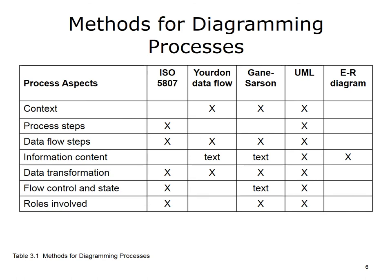This unit covers five notations commonly used to diagram processes: ISO 5807, YORDAN, Gane-Sarson, UML, and ER diagrams. ISO 5807 can represent process or data flow steps and their sequence and control, as well as information transformation and roles. YORDAN data flow diagrams represent context, data flow steps, and information transformation; information content is captured through text but not in structured form. Gane-Sarson represents the same aspects as YORDAN with the addition of capturing flow control and state in text. UML was designed to represent important aspects of system functionality, while Entity Relationship Diagrams represent only information content.